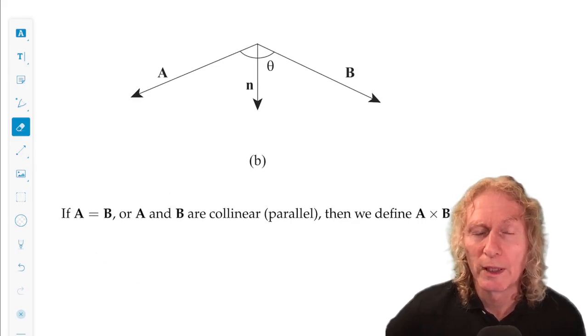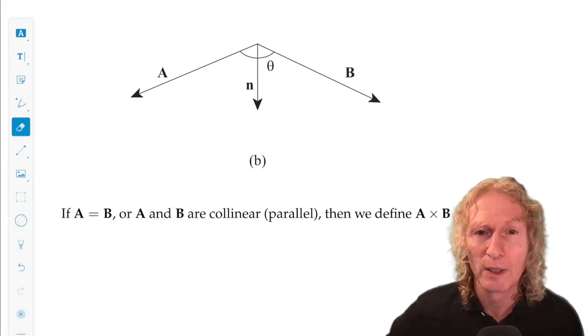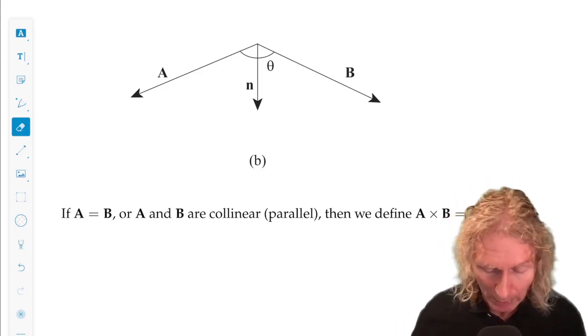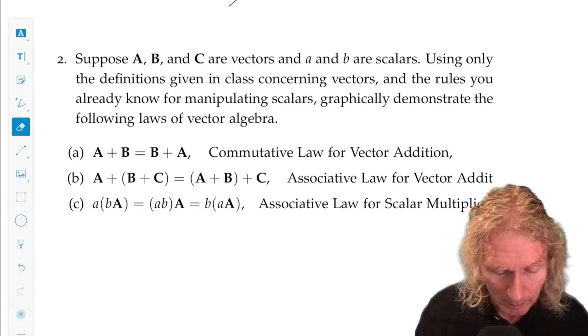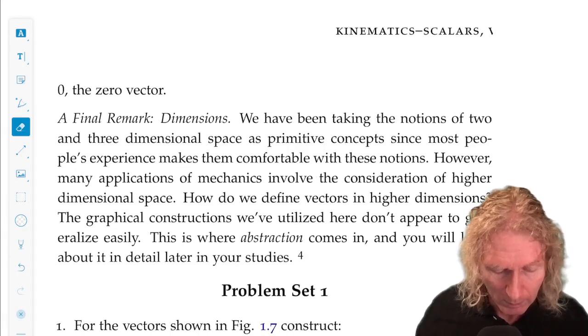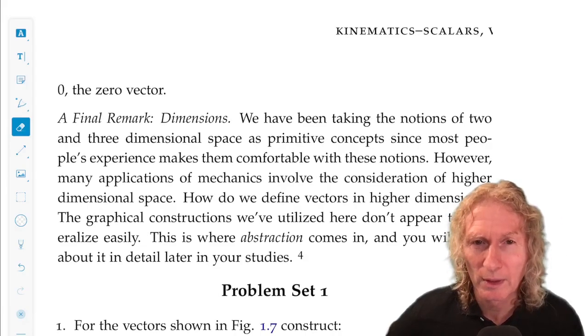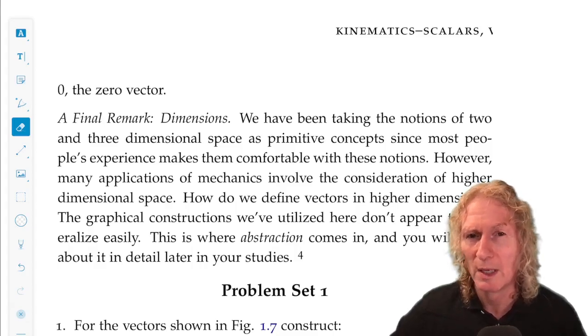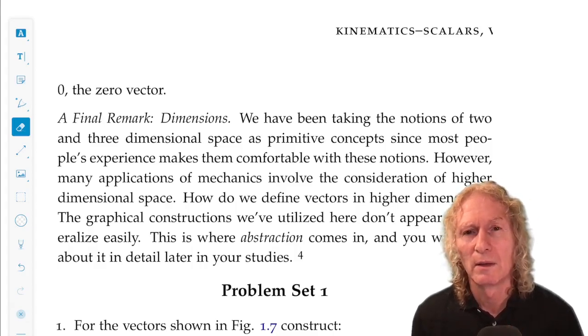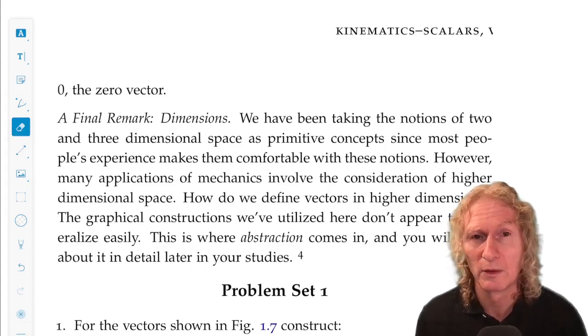So, if a were to equal b, or a and b were parallel or collinear, then the cross product would be the zero vector. The cross product and the dot product are very different, but they're very geometrical in their nature, and they sort of codify different aspects of the geometry of the two vectors in space.